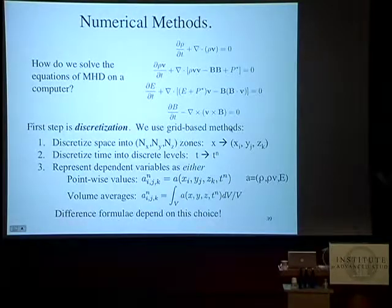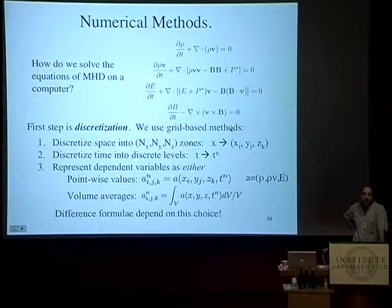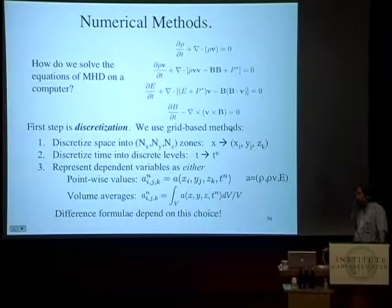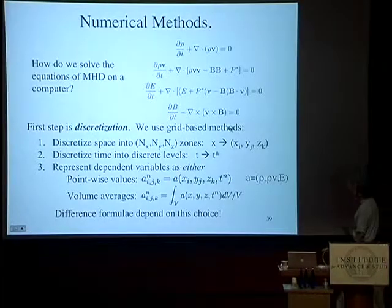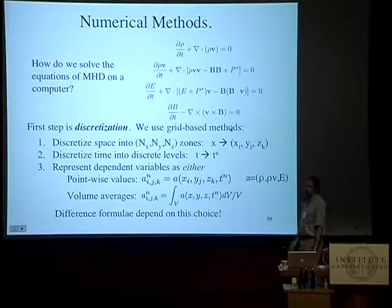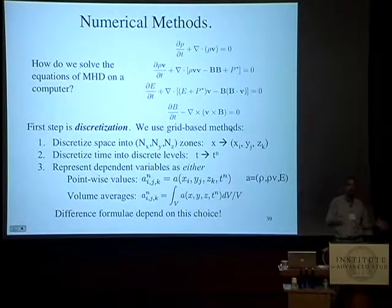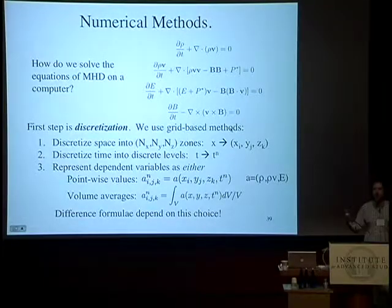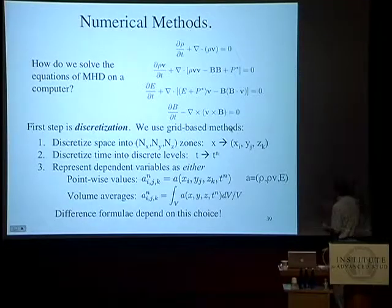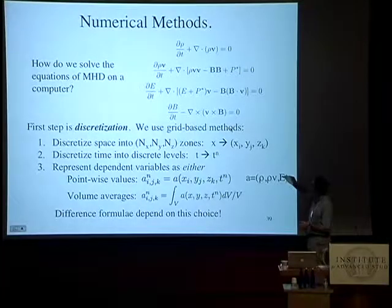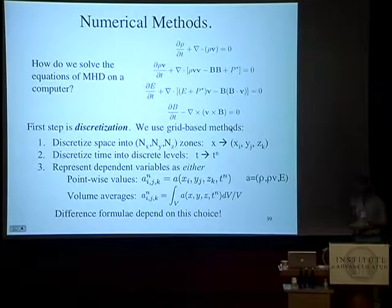How do we solve these equations? They're a daunting nonlinear system of hyperbolic conservation laws. For a grid-based method, we start with discretization: breaking up space into a finite set of cells in x, y, and z coordinates — nx, ny, nz cells — turning the continuous independent variable x into a discrete variable x_i.